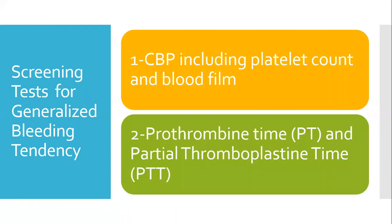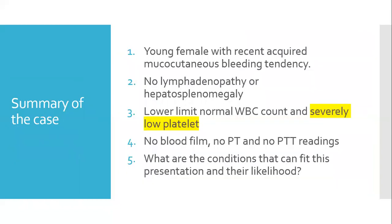The screening tests we use for a patient suspected of having a generalized bleeding tendency include: complete blood picture, platelet count, and blood film; and measurement of prothrombin time, which assesses the extrinsic pathway, and partial thromboplastin time, which assesses the intrinsic pathway.